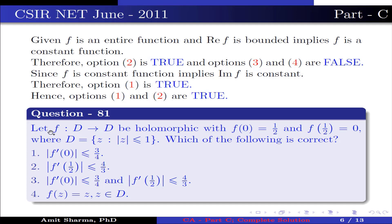Question number 81. Let f from D to D be holomorphic with f(0) = 1/2 and f(1/2) = 0, where D = {z : |z| ≤ 1}. Which of the following is correct? Option 1: |f'(0)| ≤ 3/4. Option 2: |f'(1/2)| ≤ 4/3. Option 3: both |f'(0)| ≤ 3/4 and |f'(1/2)| ≤ 4/3. Option 4: f(z) = z for z ∈ D.